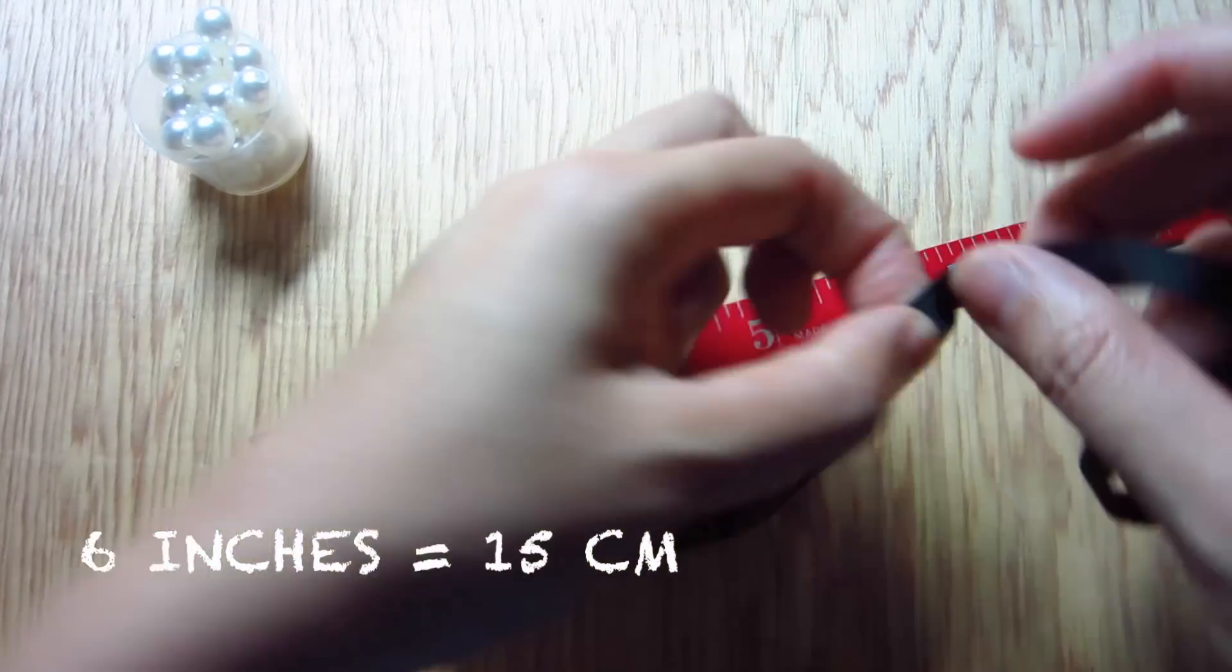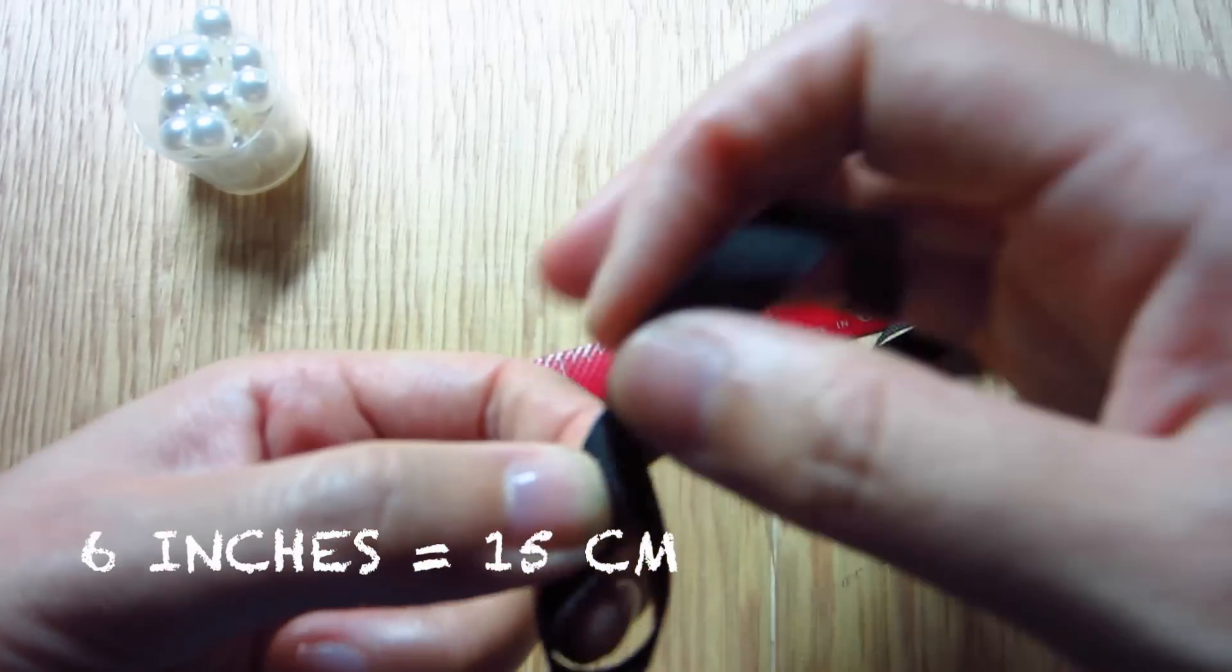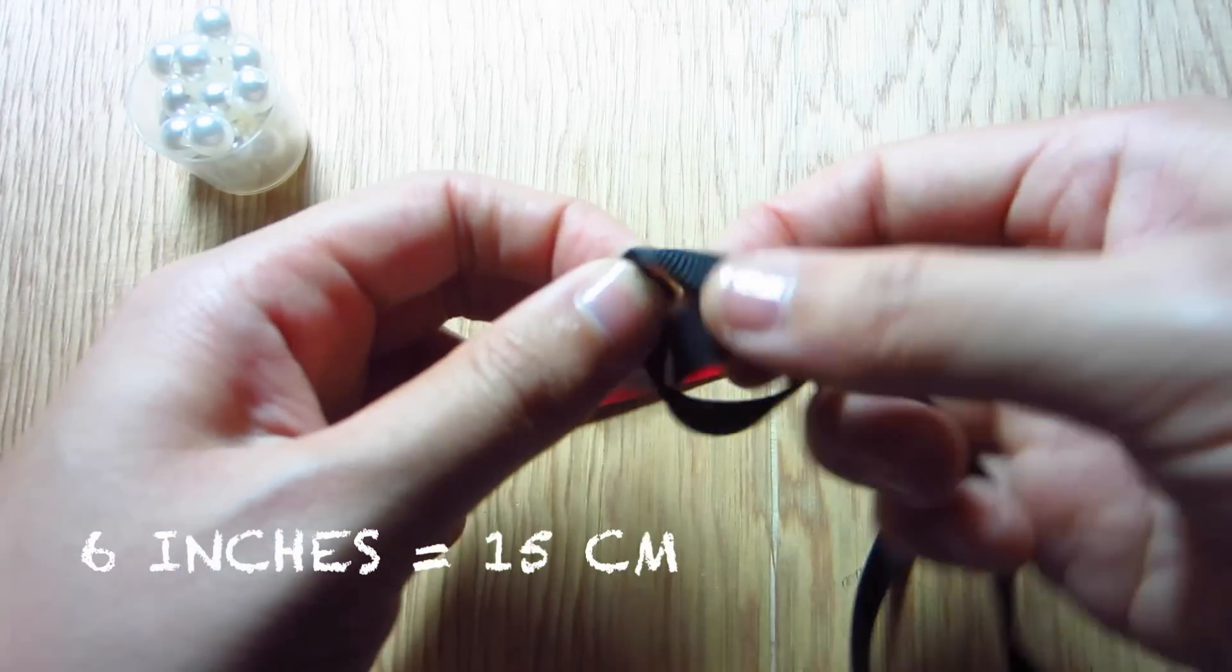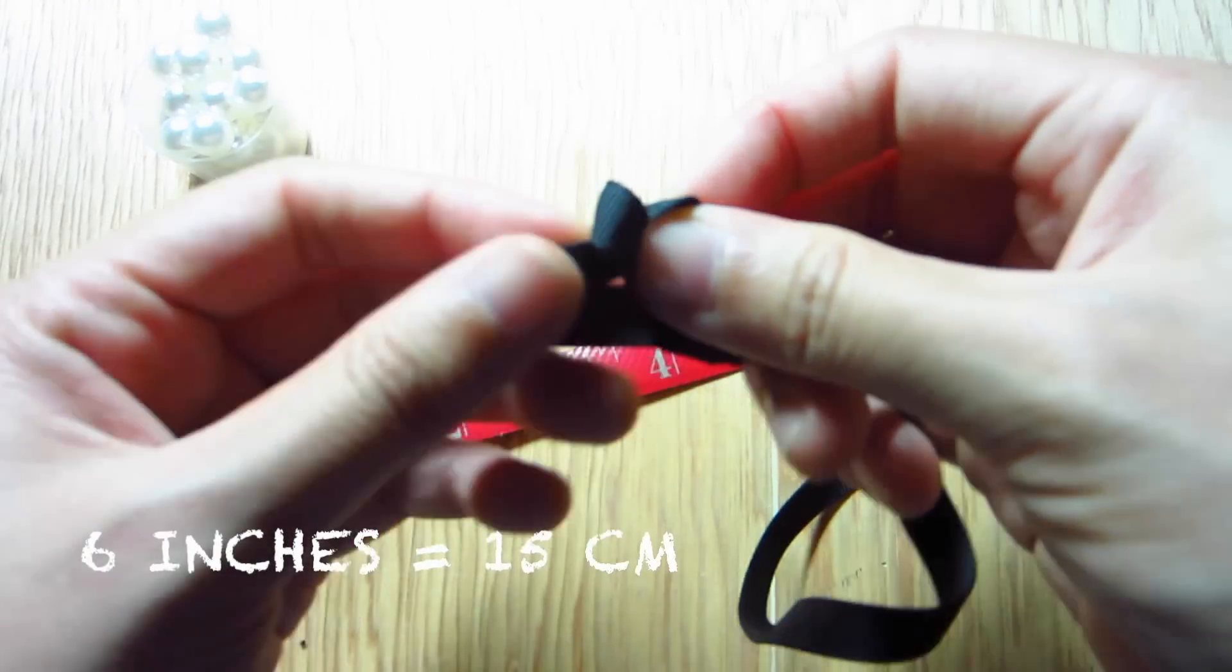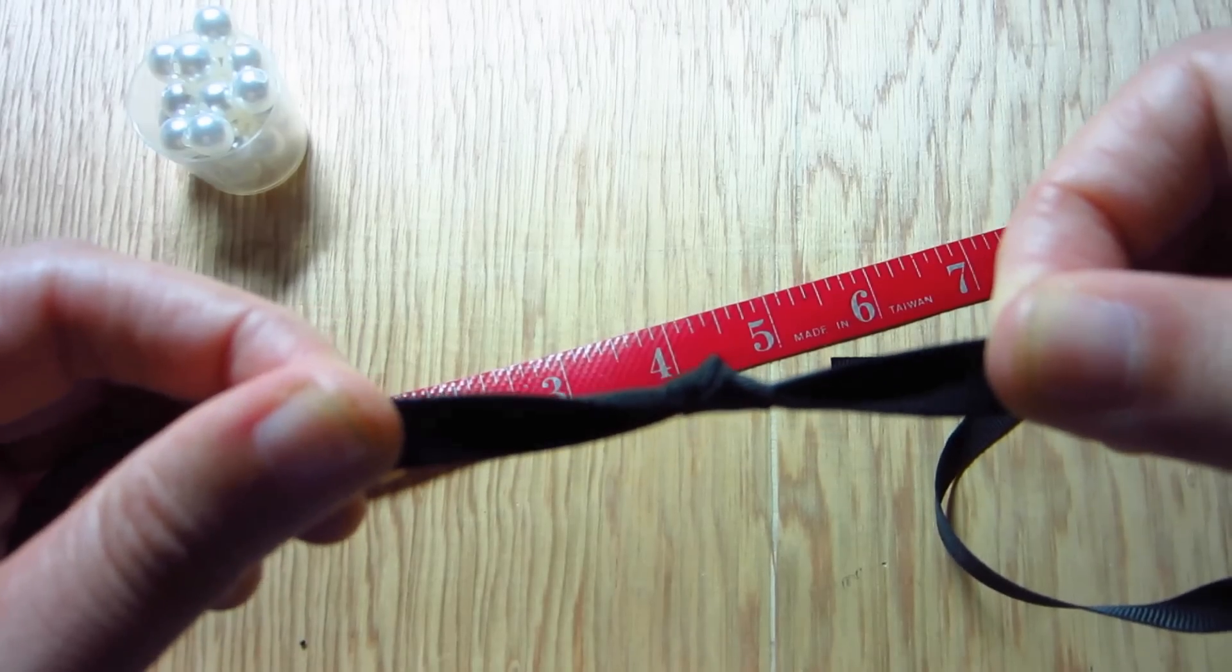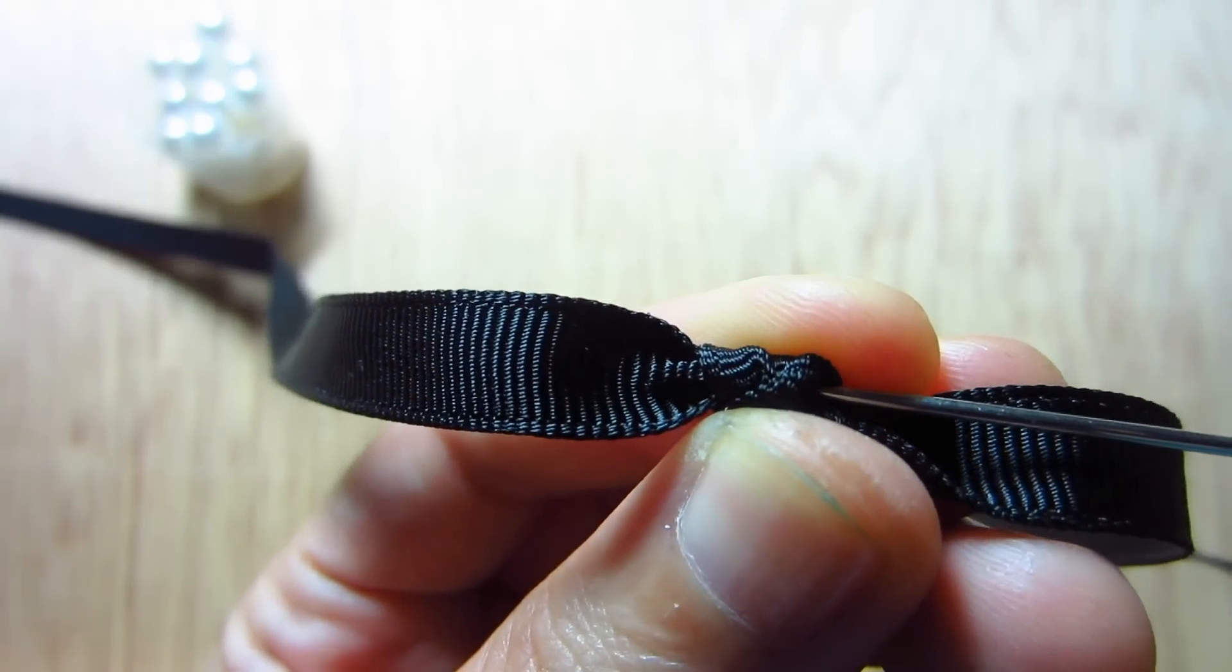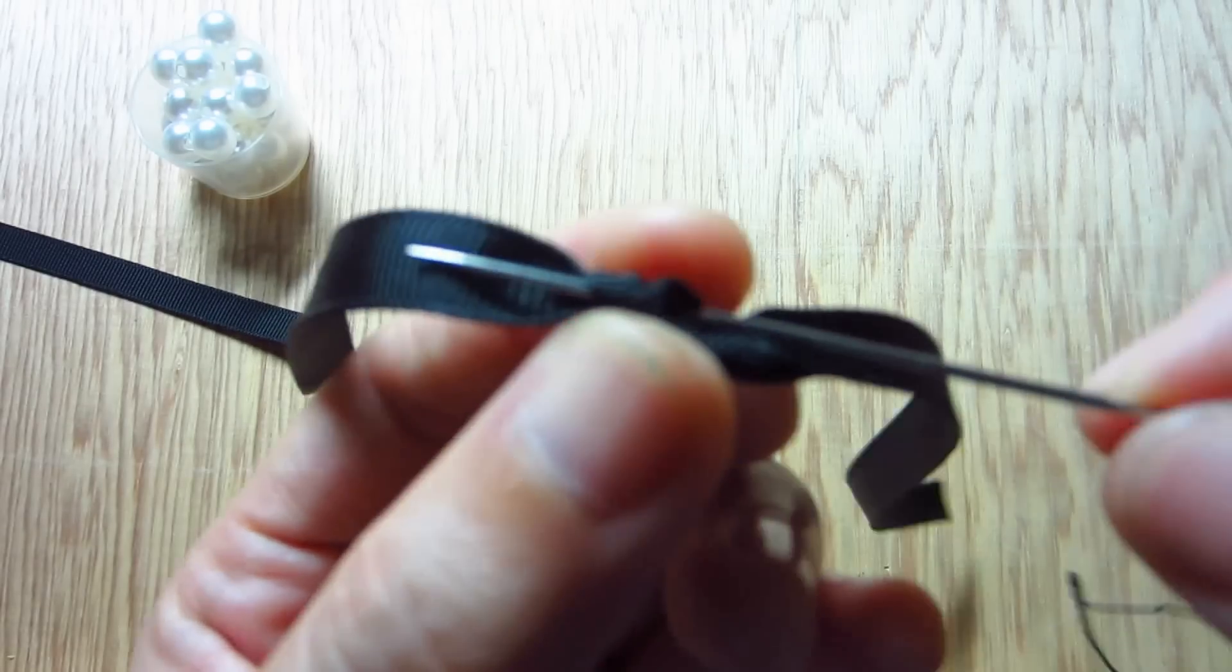Now tie the ribbon in a knot. You wanna leave out 6 inches for the bow later. Pull the needle through the knot.